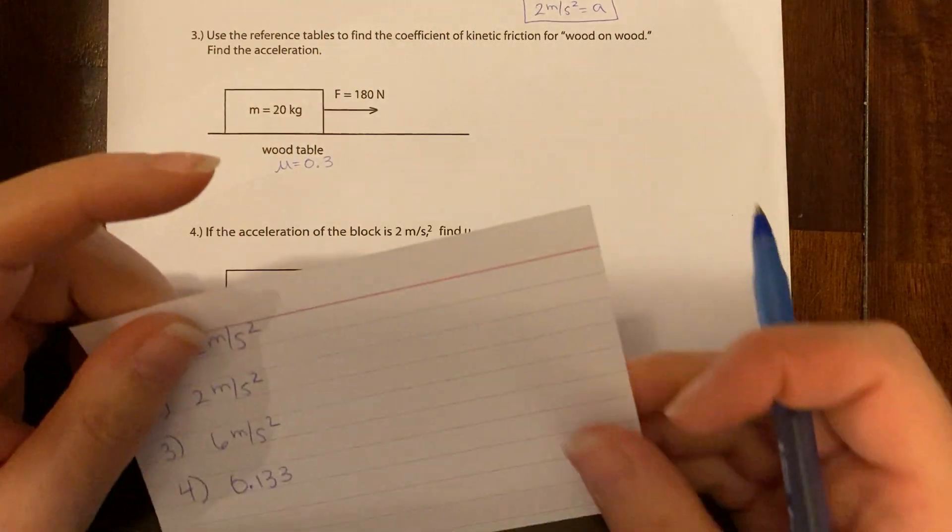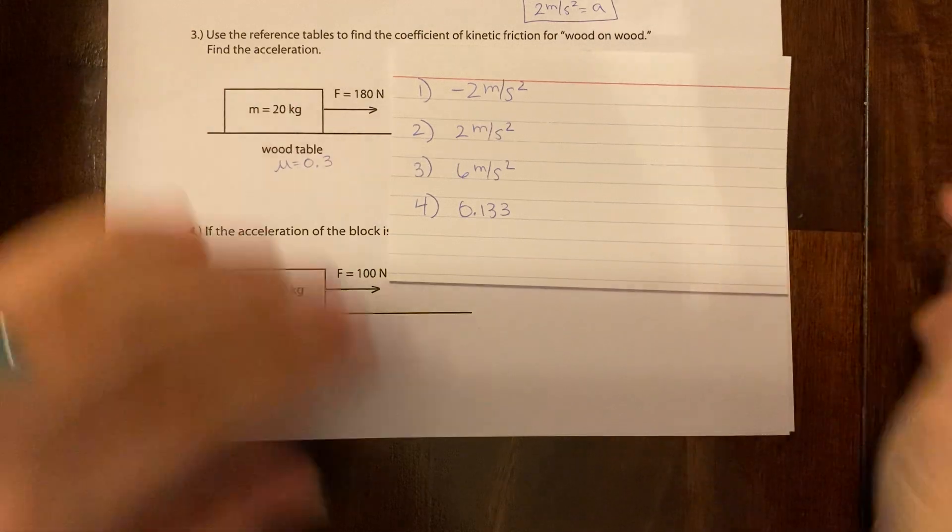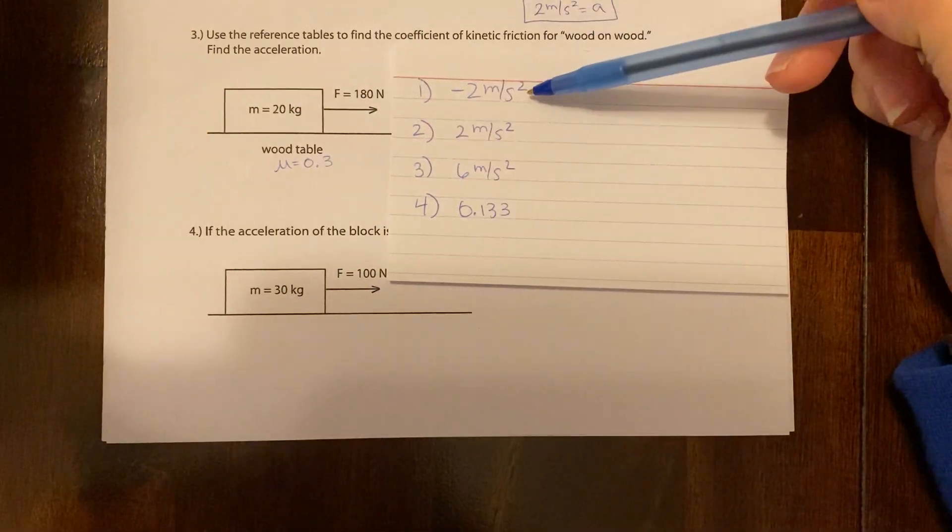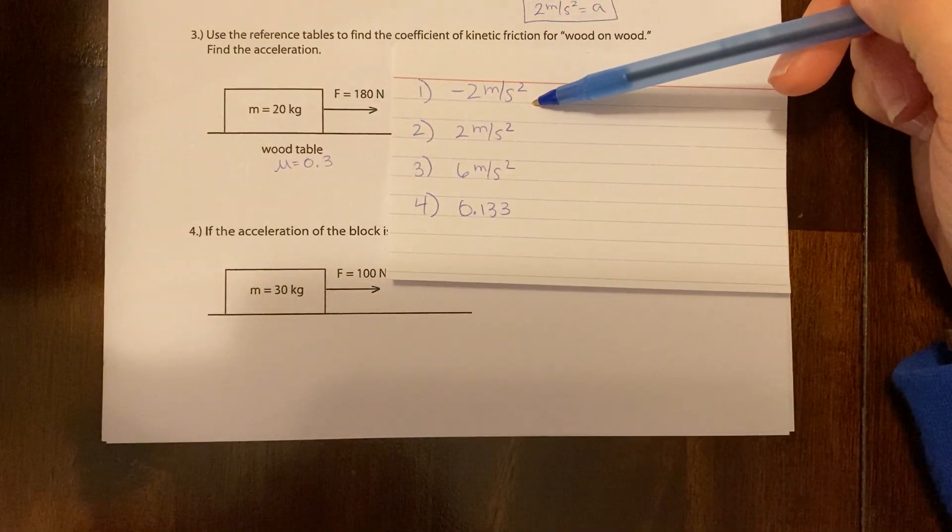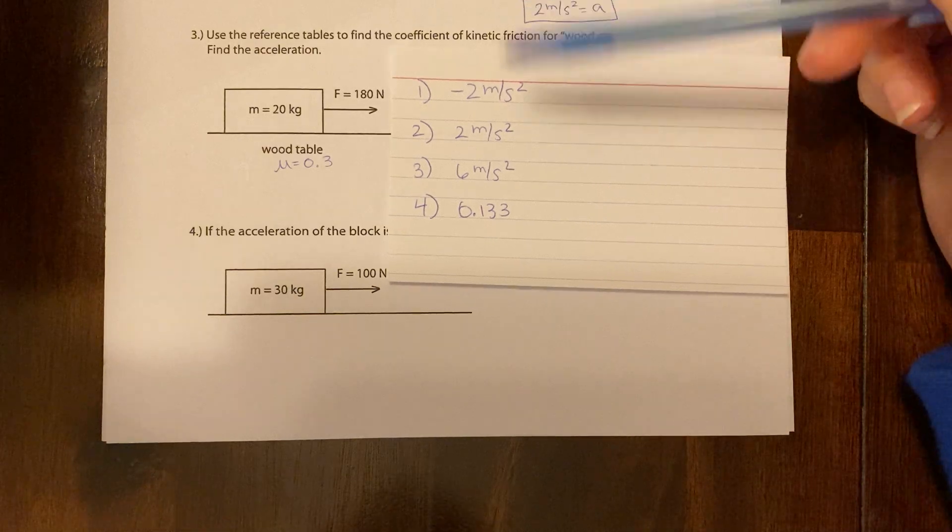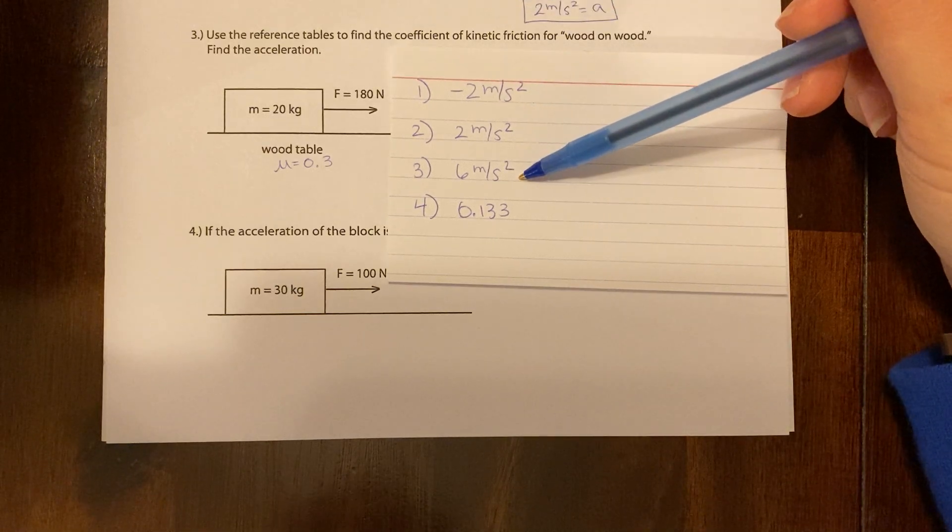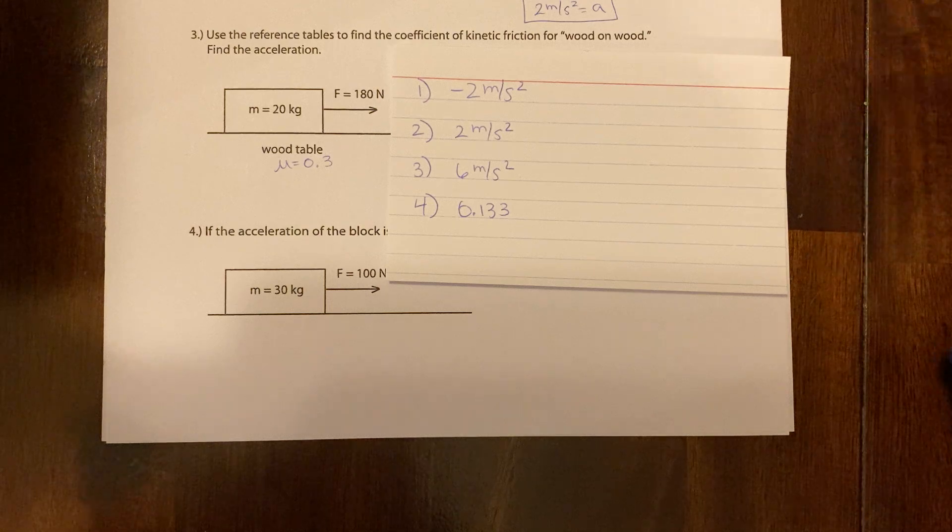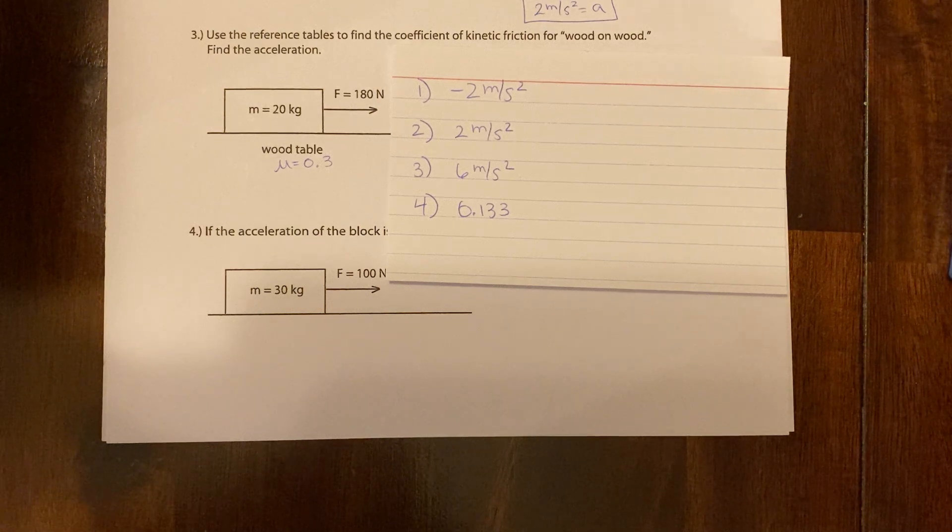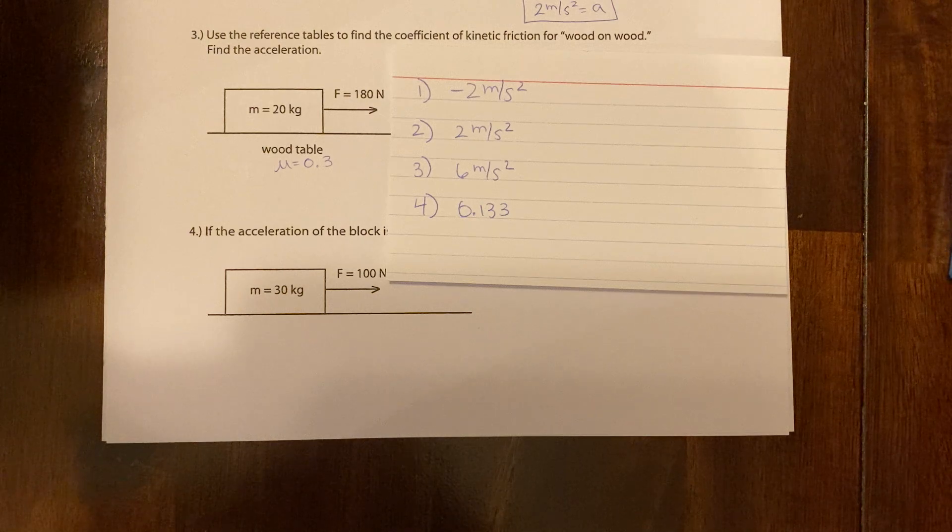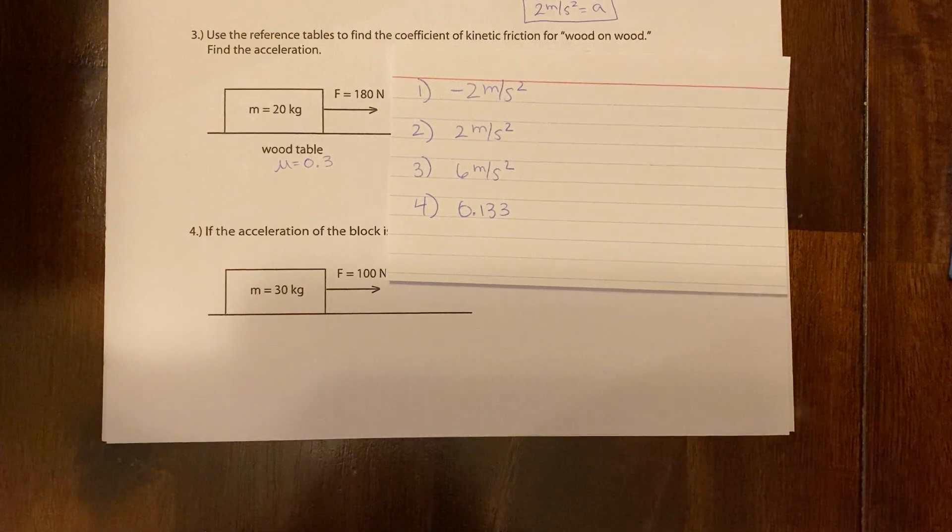And for those of you who like to check your work, here are your answers. So for one, you should get an acceleration of negative 2 meters per second squared. For three, you should get 6 meters per second squared. And for four, you should get 0.133. Good luck. If you're in class and you need help, ask a partner. If you're at home and you need help, ask me tomorrow. Good luck, friends.